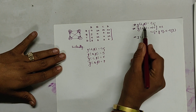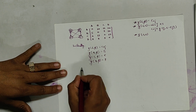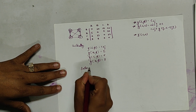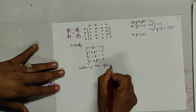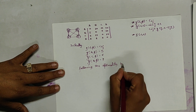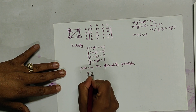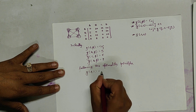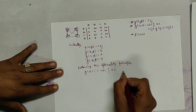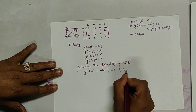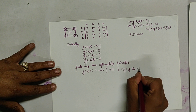This is the first rule which I have used. Now we use the second rule, following the optimality principle. The second rule is: G(i, S) = minimum over j belonging to S of C(i, j) plus G(j, S minus {j}).